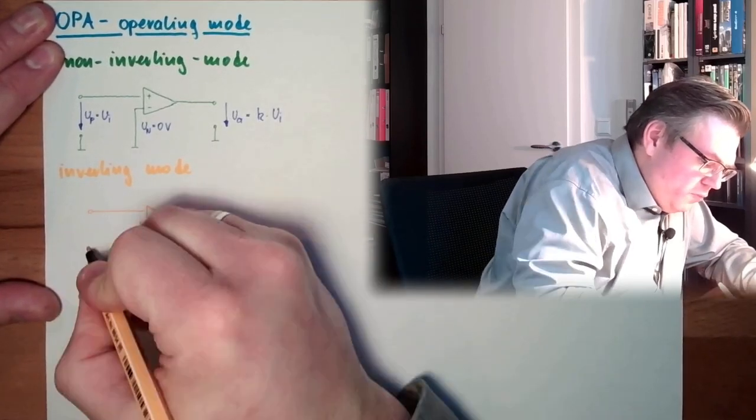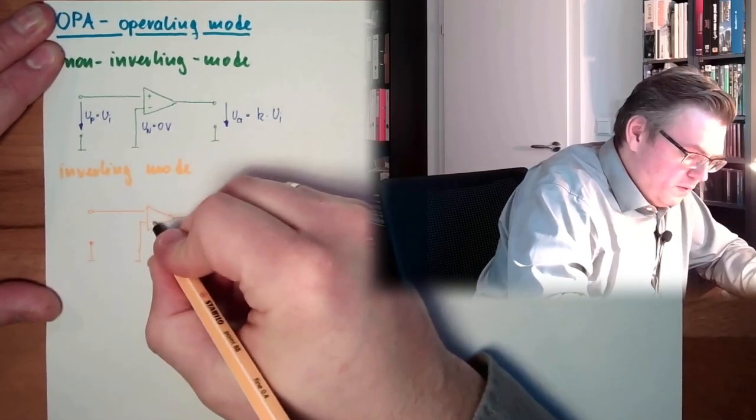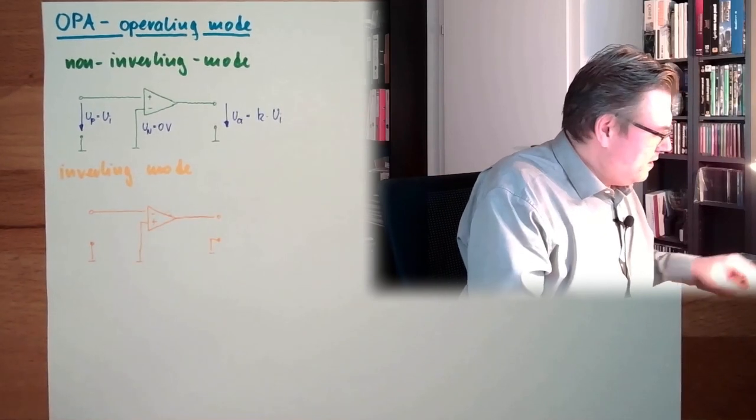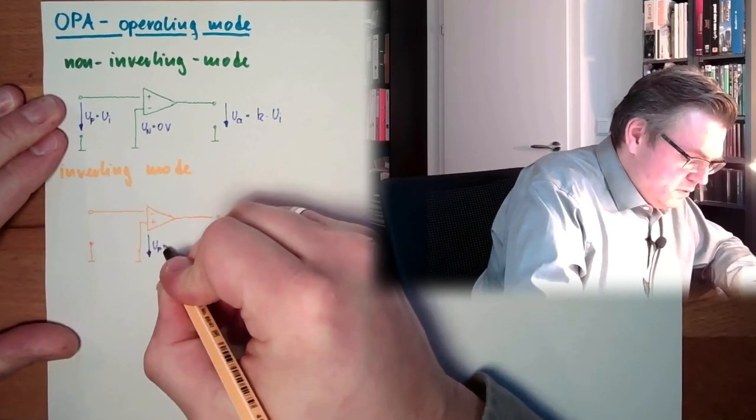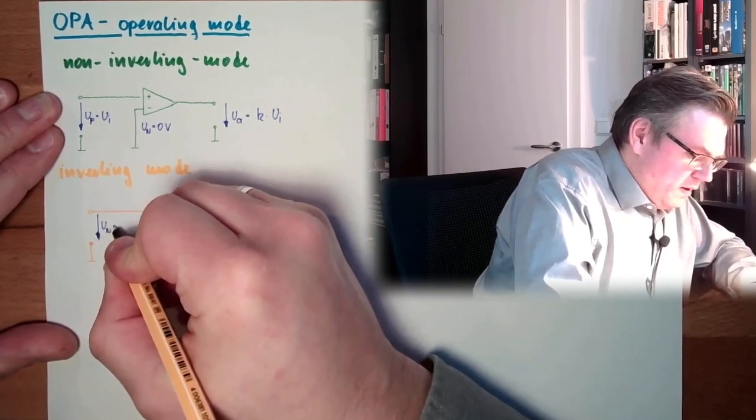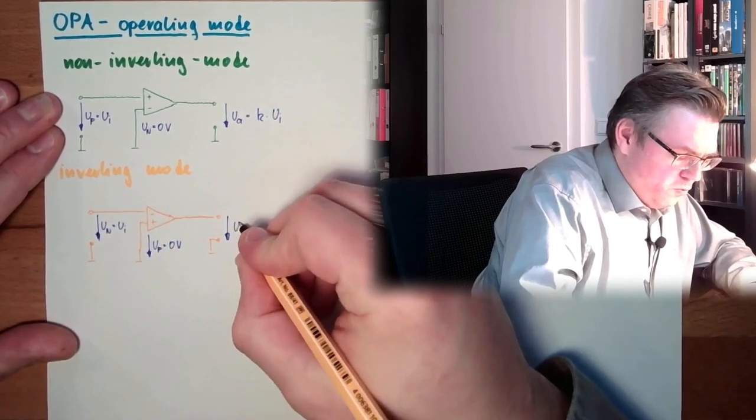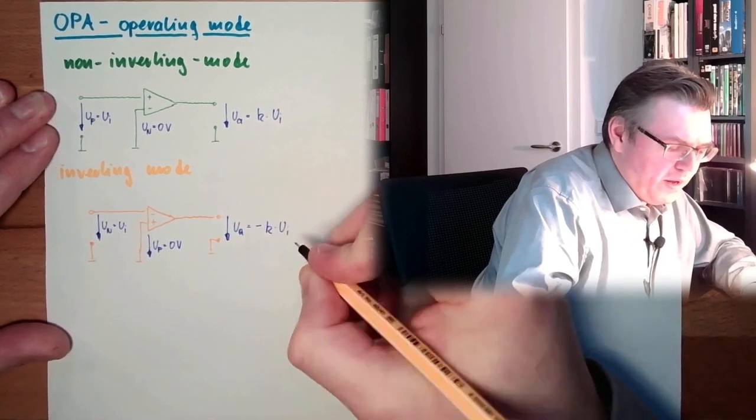One is the input value. But now I do the following. Plus and minus. Switch plus and minus. So, here, UB, positive voltage is zero volt. UN equals UI. And here we have the UA. And UA is now minus K multiplied by UI.